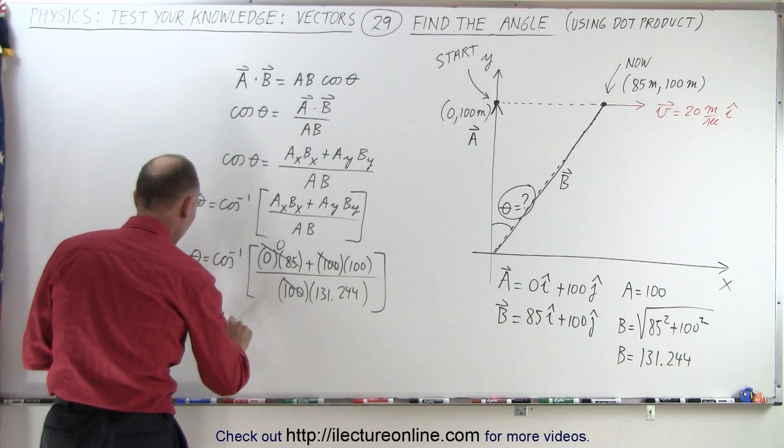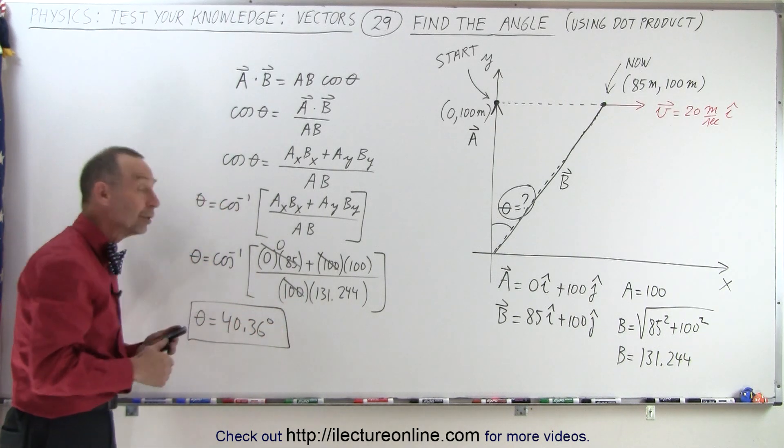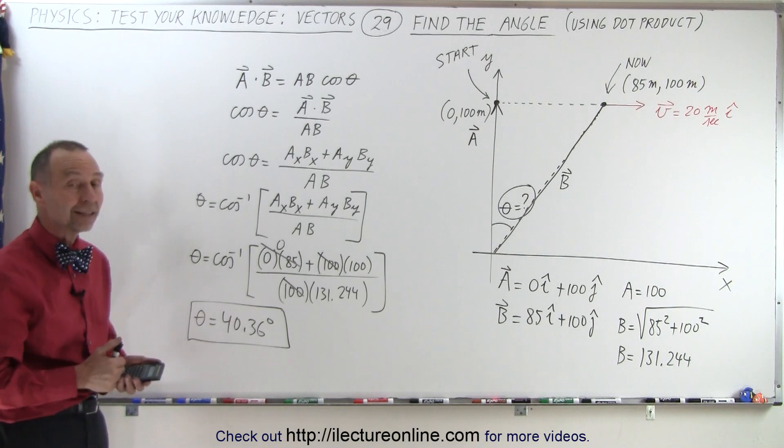Theta equals 40.36 degrees, and that's how we find the angle between those two vectors. And that is how it's done.